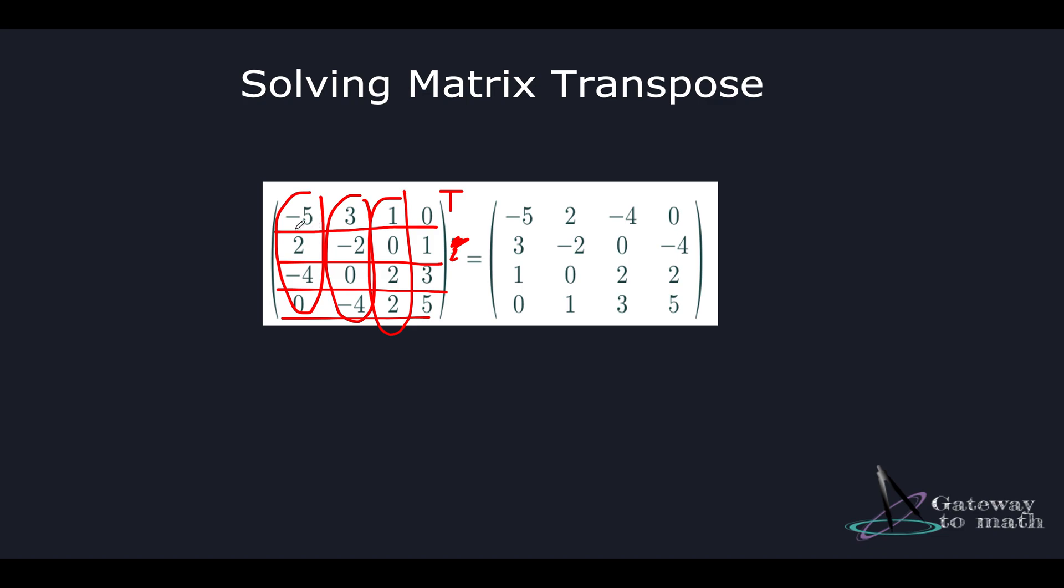So what is the transpose of this matrix? The values that we have in the first row equals minus 5, 3, 1, 0. We'll replace it with the entries in the first column which is minus 5, 2, minus 4, 0. So this is my first row entries.